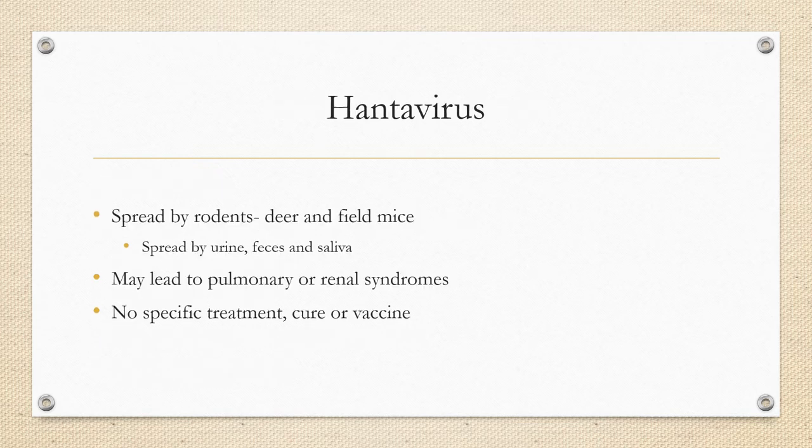Hantavirus is an RNA virus that leads to pulmonary or hemorrhagic fever, transmitted by the deer mouse or field mouse and mouse droppings. Signs and symptoms include fluid-filled lungs and a quick onset of respiratory distress. There is no specific treatment, cure, or vaccine for Hantavirus.